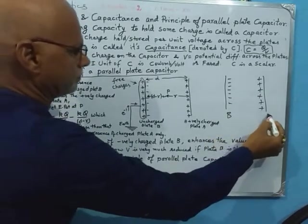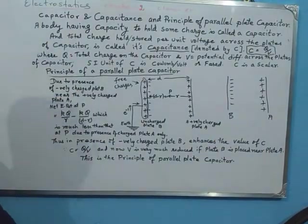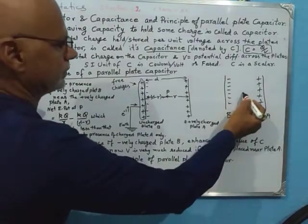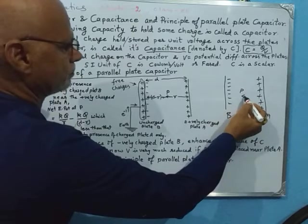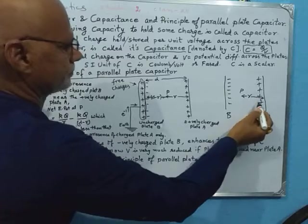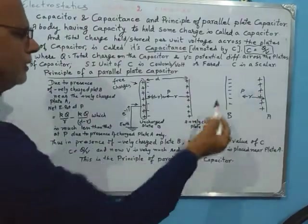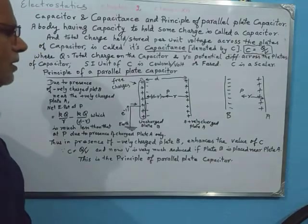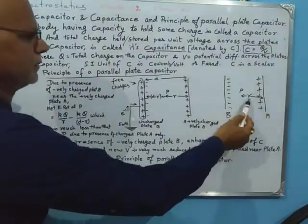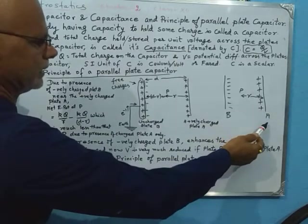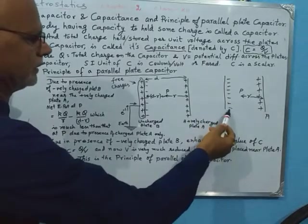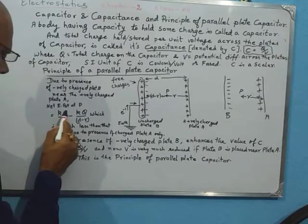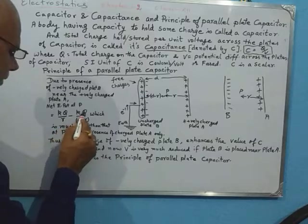We now have a negatively charged plate B placed near a positively charged plate A. At any point P which lies at distance r from plate A, the electric potential is given by kQ/r. Since the negatively charged plate B is also placed there, the total potential at P equals the potential due to plate A plus the potential due to plate B, which is kQ/r minus kQ/(d minus r).